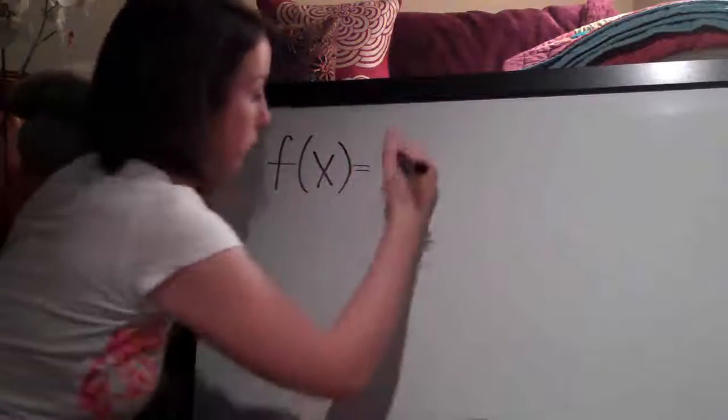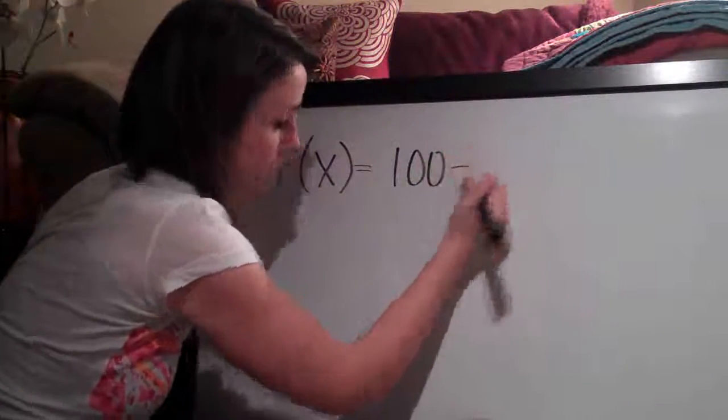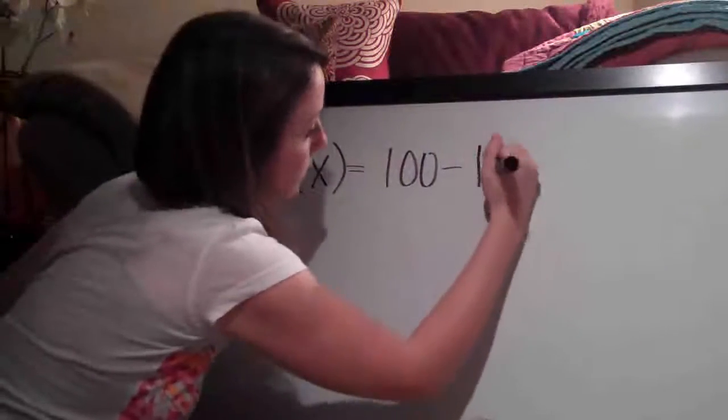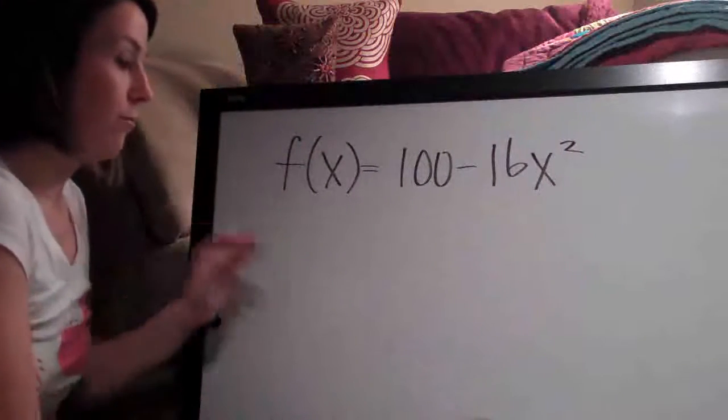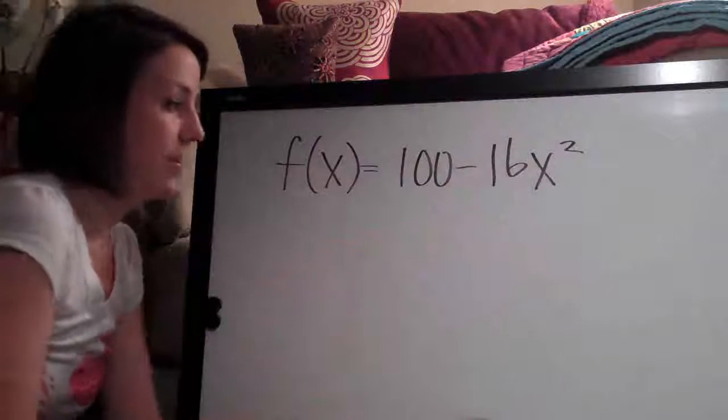f of x equals 100 minus 16 x squared. The last derivative problem we did didn't have an exponent, now we've got an exponent.